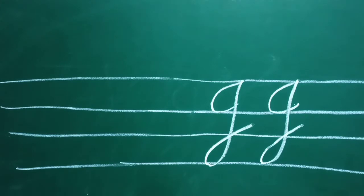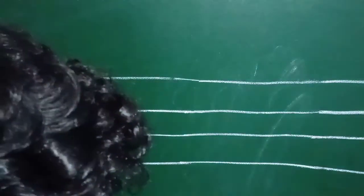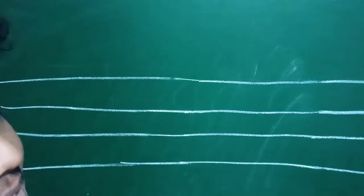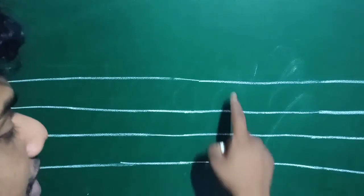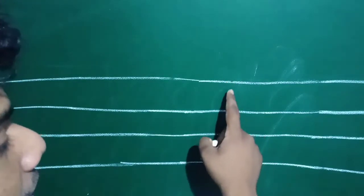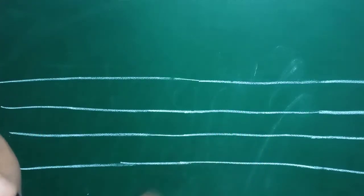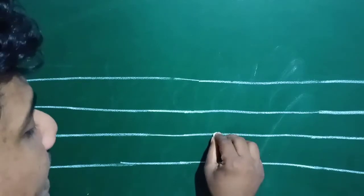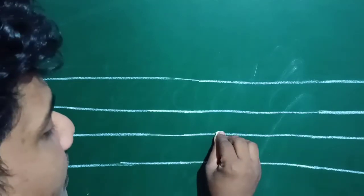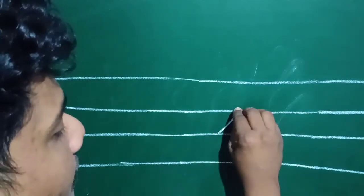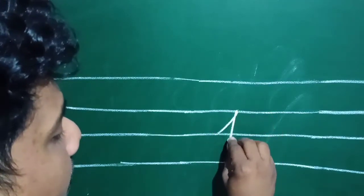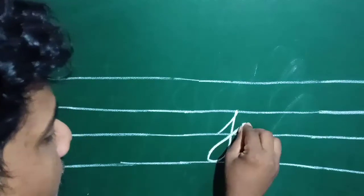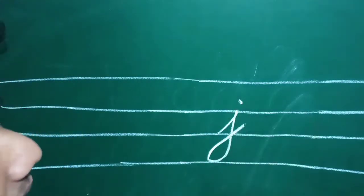Okay, small letter J — we will start from the third line. 1, 2, 3, 4 — third line. Like this. This is small letter J.